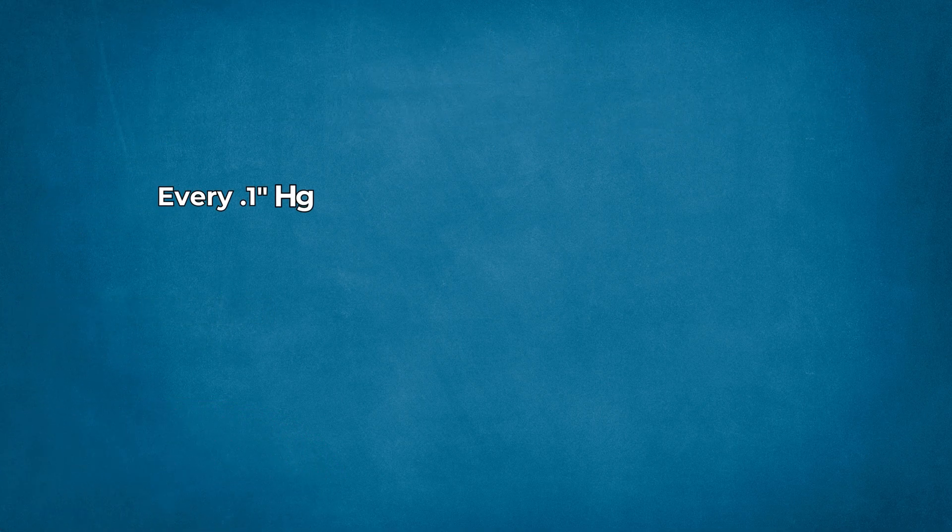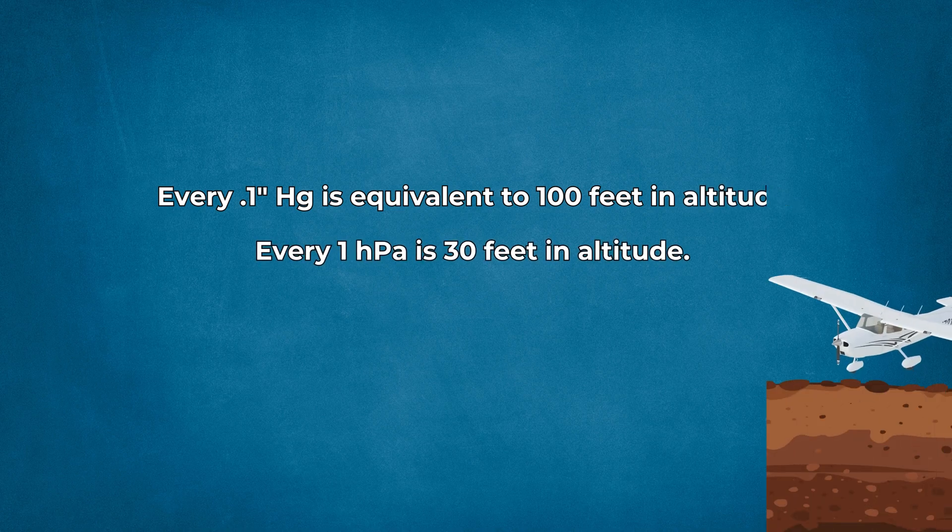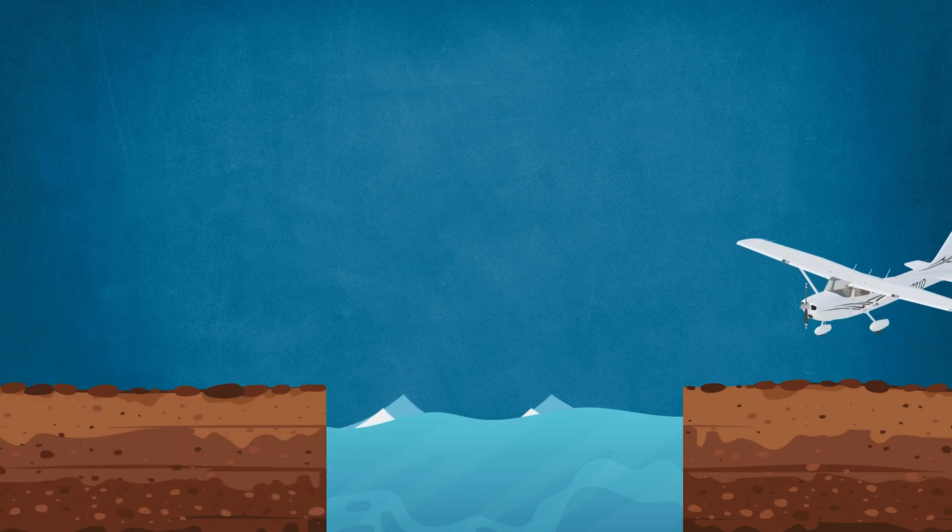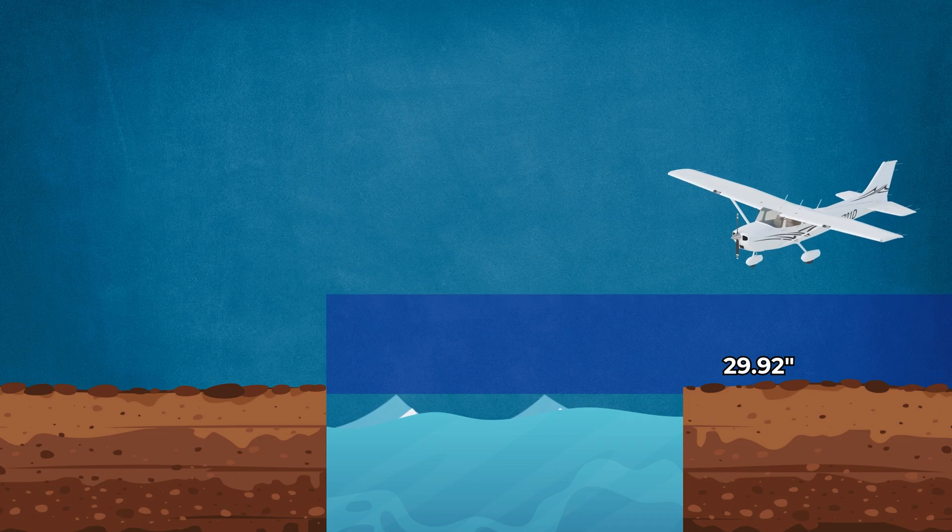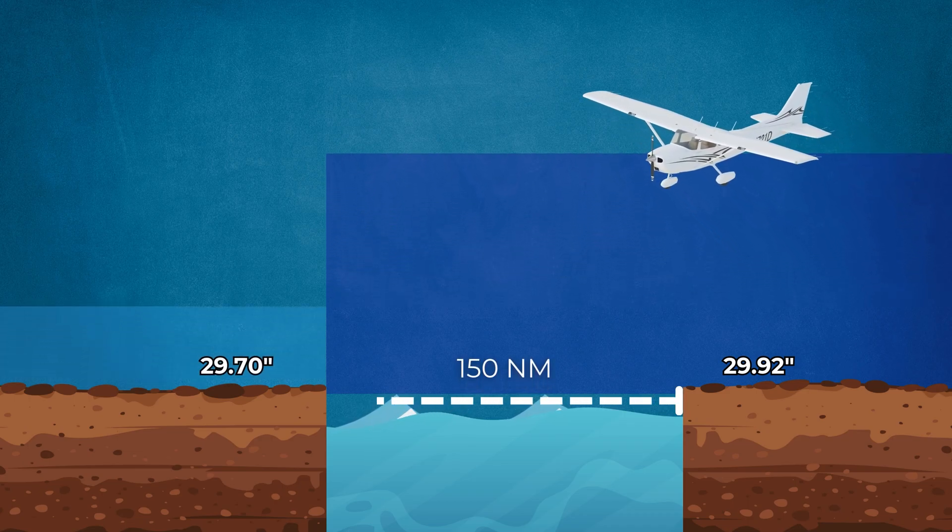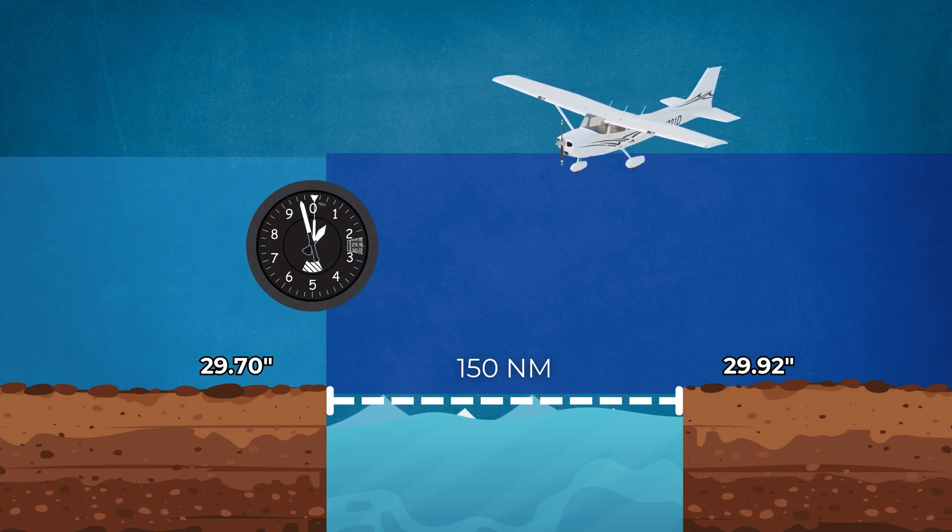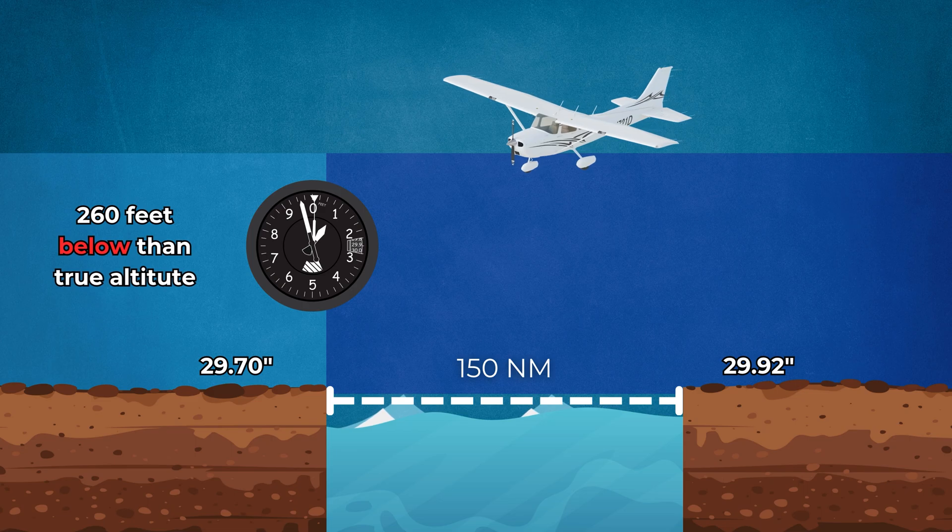Every 0.1 inches of mercury is equivalent to 100 feet in altitude, and every 1 hectopascal is 30 feet in altitude. So, let's say you took off with an altimeter setting of 29.96. 150 miles into your flight, the pressure dropped to 29.70 inches of mercury. The altimeter would be off by approximately 260 feet in altitude if you didn't make any adjustments.